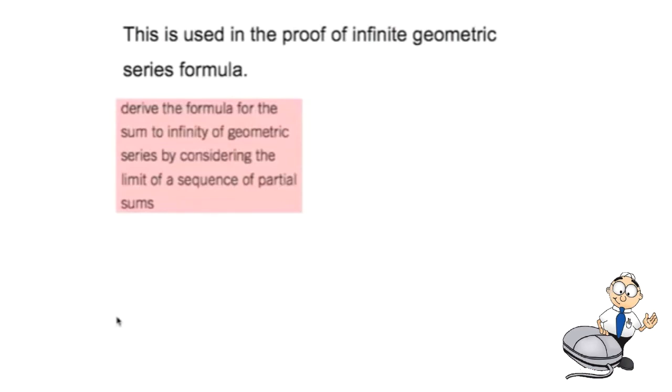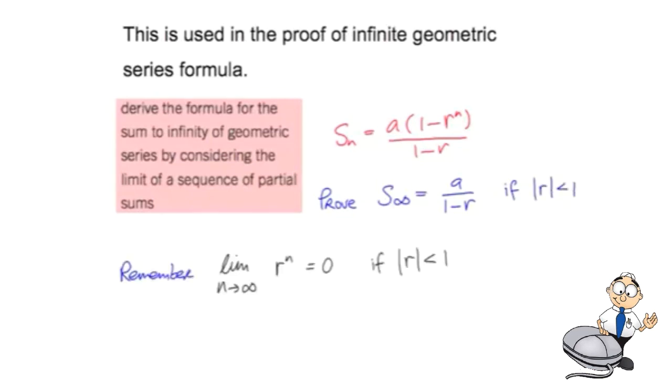Now we use this result, this last one, to use a proof that is on the course. To prove the sum of an infinite geometric series. Now we're given in the log tables that the sum of a geometric series is given by this formula. And we want to prove, given the log tables, that the sum to infinity of the series is equal to a over 1 minus r, if r has magnitude less than 1. Now we're going to use this result from last. Remember that the limit of r to the power of n is equal to 0.